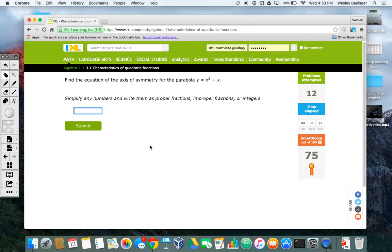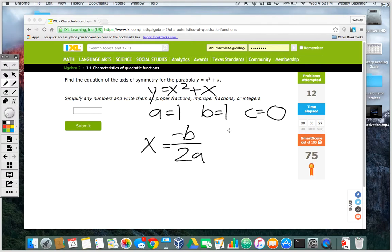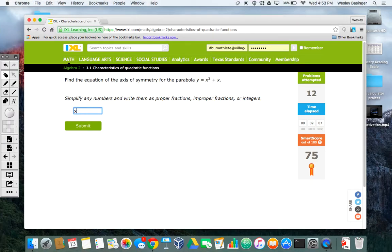Alright? This one's a little bit different, because the values are different. So, on this one, it's y equals x squared plus x. Identify a equals 1, b equals 1, and c equals 0. The equation, x equals negative b divided by 2a. b is negative 1, so we do negative 1, divided by 2 times 1, and then that's going to give you negative 1 half. So, the axis of symmetry is going to be x equals negative 1 half. Okay?